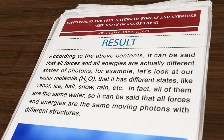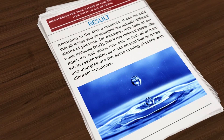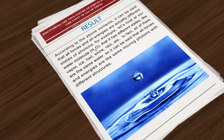Result: According to the above contents, it can be said that all forces and all energies are actually different states of photons. For example, consider the water molecule H₂O, which has different states like vapor, ice, hail, snow, and rain — yet all of them are the same water. So it can be said that all forces and energies are the same moving photons with different structures.